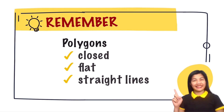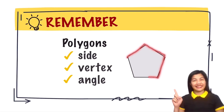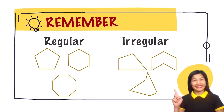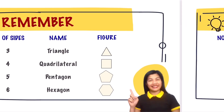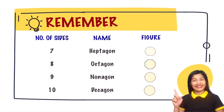Remember: polygons are closed, plain or flat figures made up of line segments — straight lines. Polygons have sides, vertices, and angles. There are two types: regular polygons have equal side lengths and equal angle measurements, whereas irregular polygons have side lengths and angle measurements that are not equal. We can also name polygons by number of sides: three sides — triangle; four — quadrilateral; five — pentagon; six — hexagon; seven — heptagon; eight — octagon; nine — nonagon; ten — decagon.